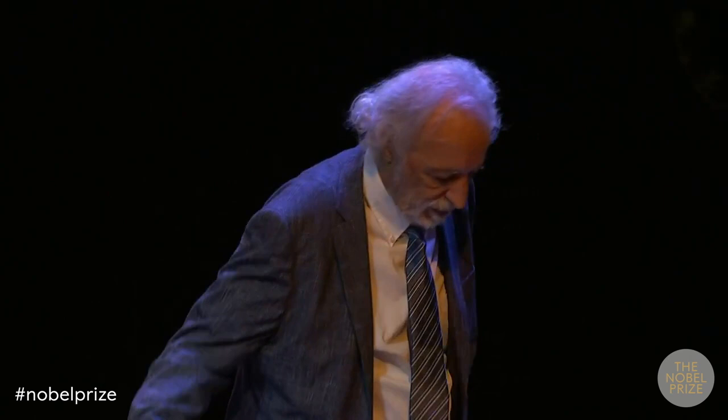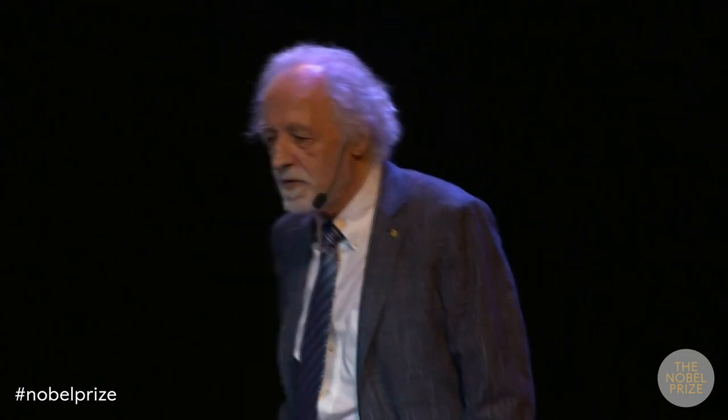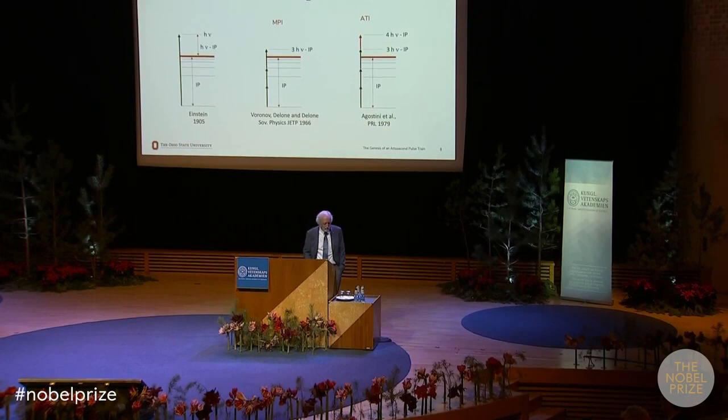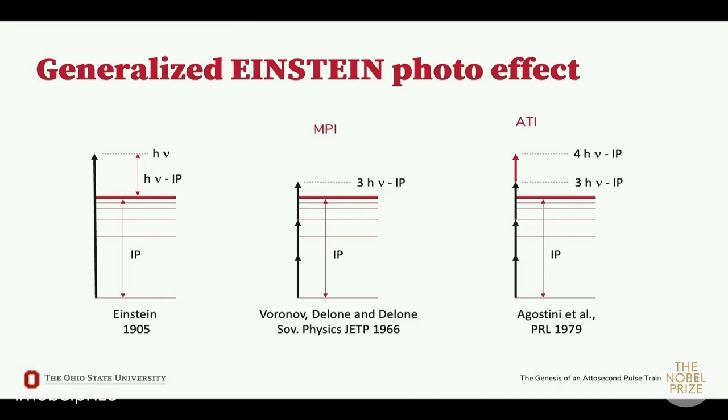Then I come to above-threshold ionization, or ATI. By measuring the kinetic energy of the photoelectrons, it was immediately seen that electrons had more energy than predicted by the Einstein photoelectric effect. The electron energy could be 3hν minus IP, for instance, plus one or two additional photons — which you could see as peaks in the photoelectron spectrum.